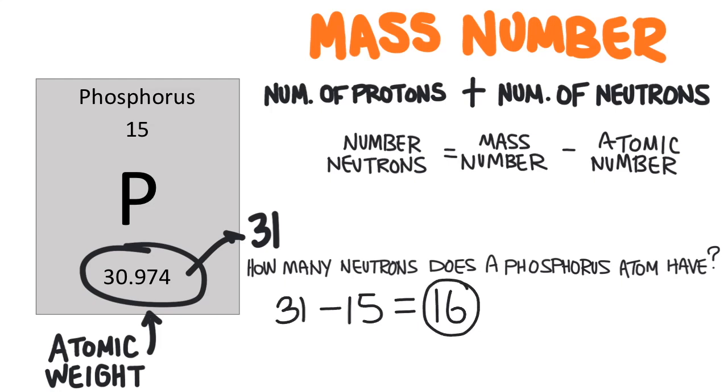We'll learn in the next video that an element can have different types of atoms depending on the number of neutrons and we call those different types of atoms isotopes. This is why the atomic weight isn't a whole number. It averages the mass of all the different isotopes.